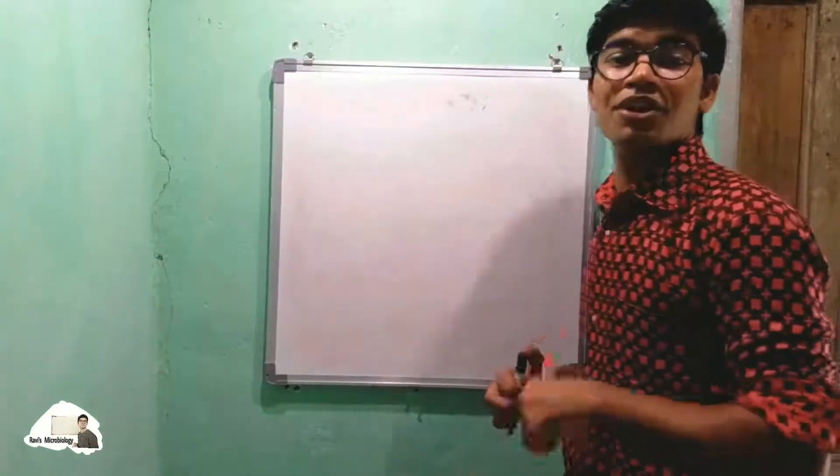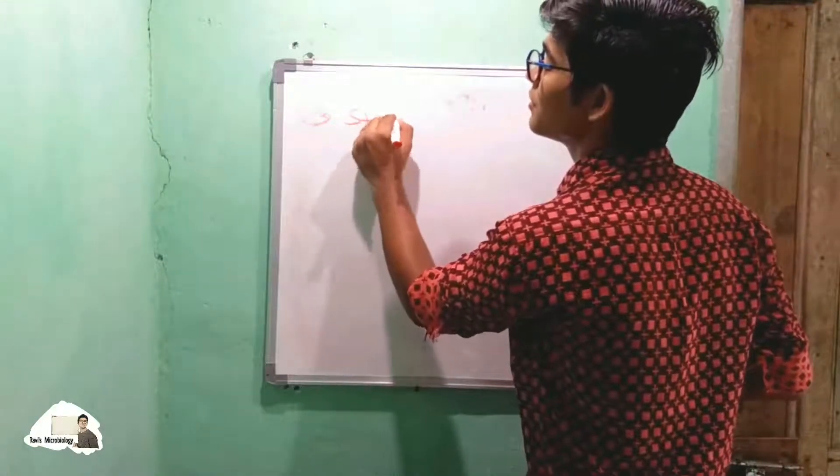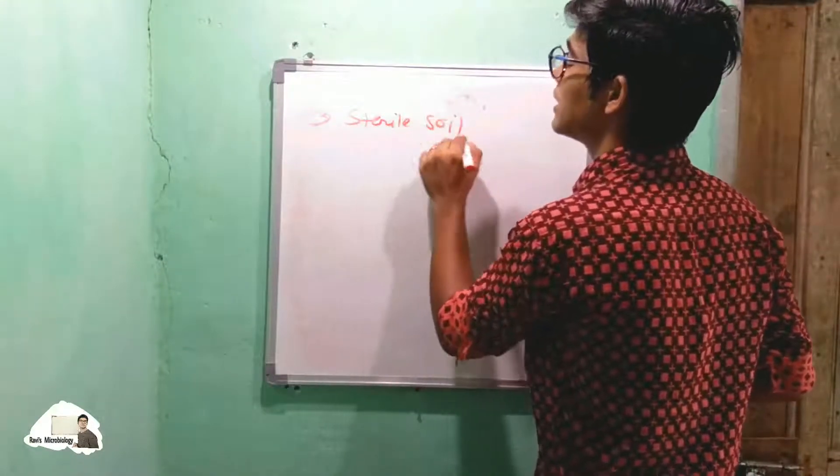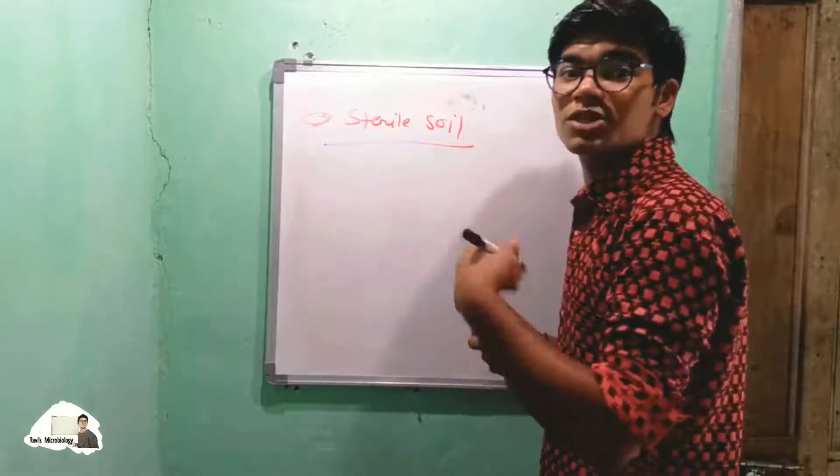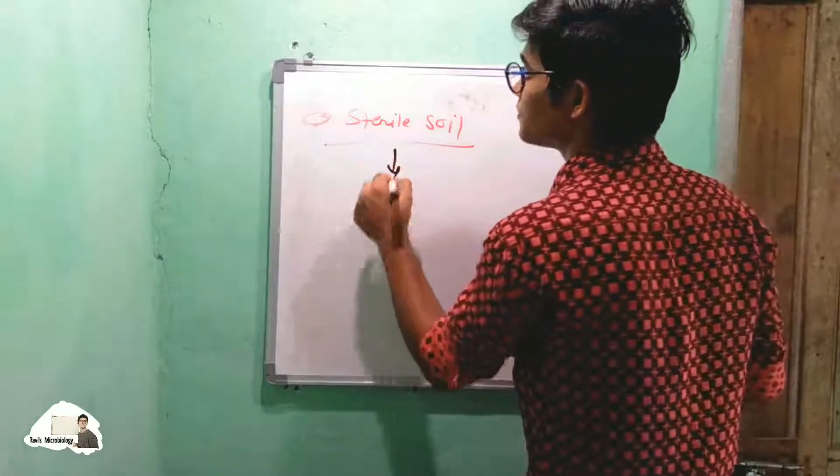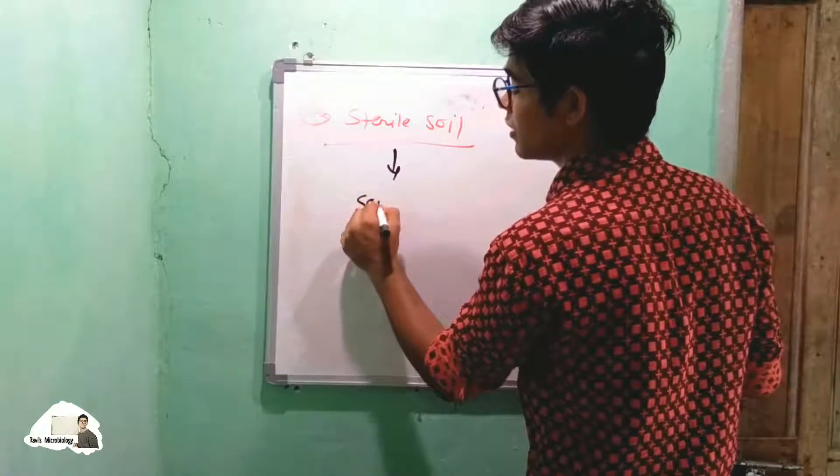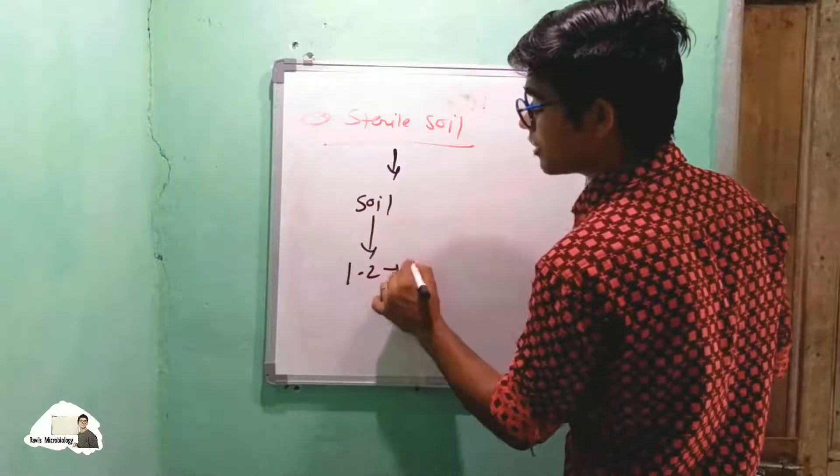The third method uses sterile soil. This method is only used for organisms or spores which cannot be preserved by the previous two methods. In this, we take soil and in one or two hours we give it heat.